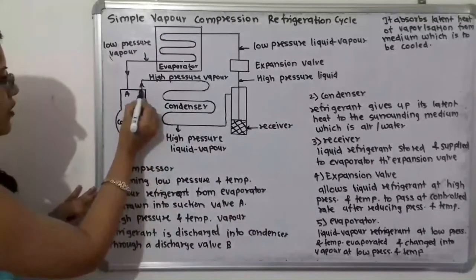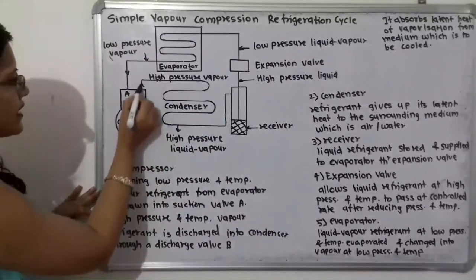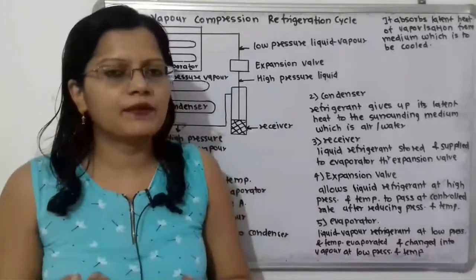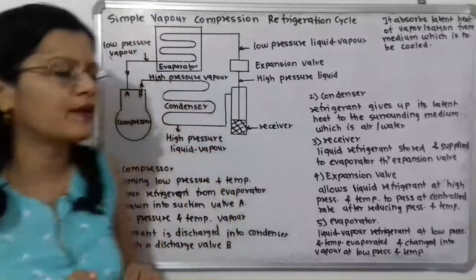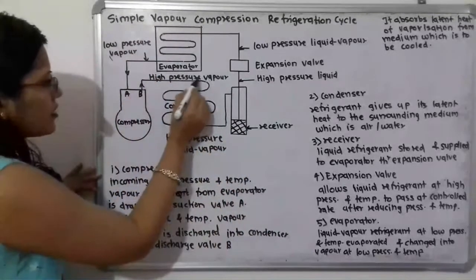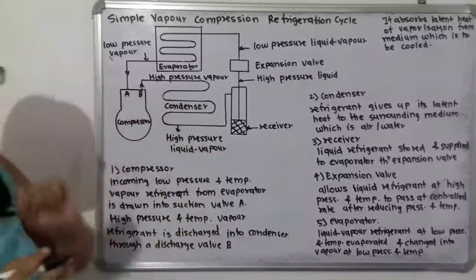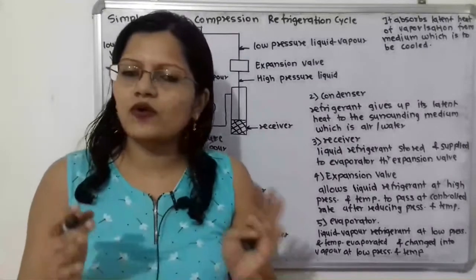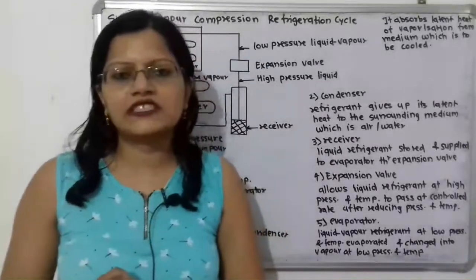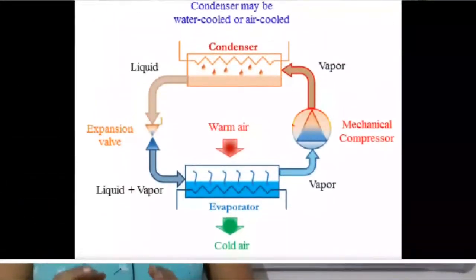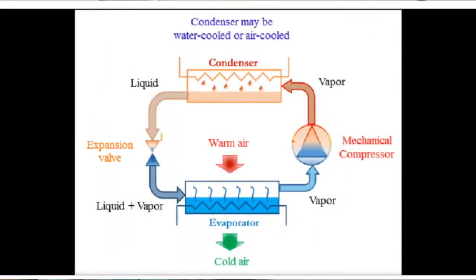The temperature and pressure are getting increased, and from the discharge valve B the refrigerant is discharged at high pressure and high temperature in vapor form. It then comes to the condenser, where the cooling process is taking place. Either air or water is used for the cooling purpose.